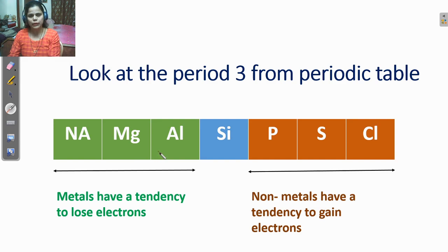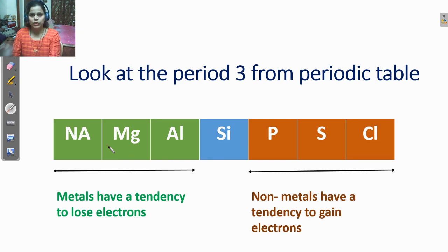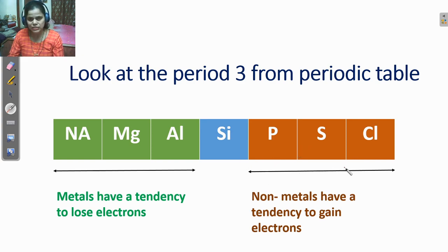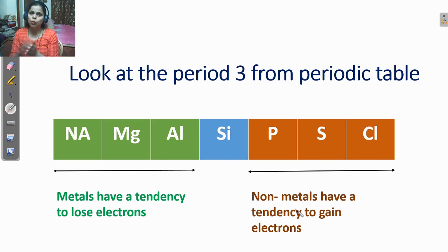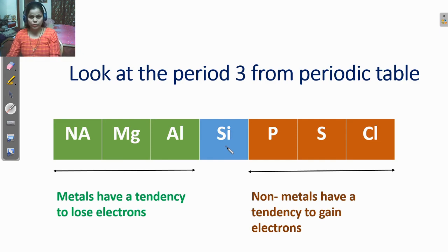Why are these metals? Because they have less than 4 electrons in their outer shell. In the outer shell of the metals, they have 1, 2, or 3 electrons. So they have a tendency to lose electrons. But in the non-metals, they have a tendency to gain electrons because in the outermost shell of the non-metals, they have more than 4 electrons — it may be 5, 6, or 7 — so they show the non-metallic character. Silicon is a metalloid because it has 4 electrons in its outermost orbit.